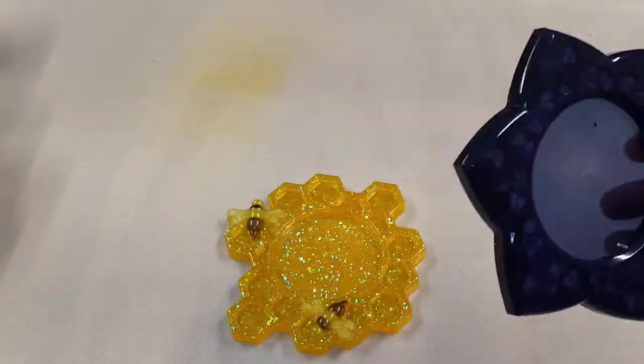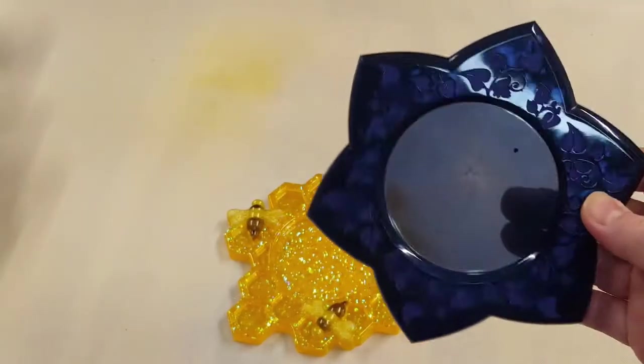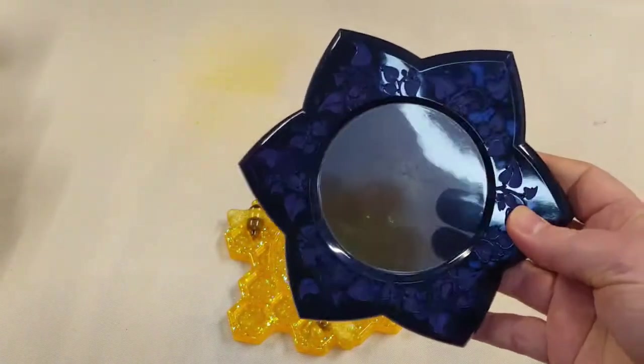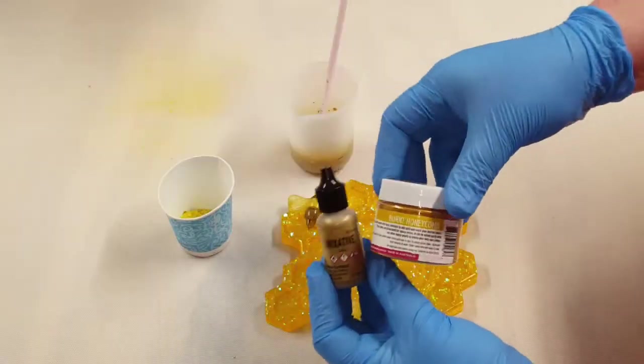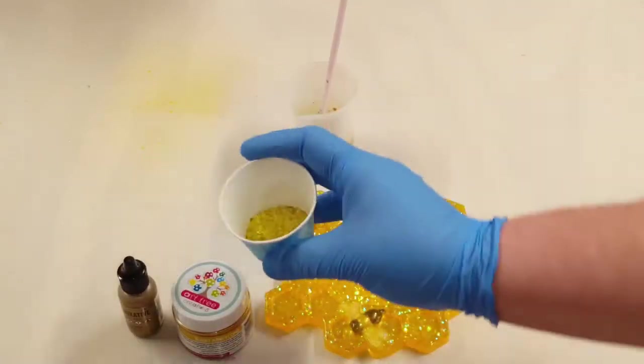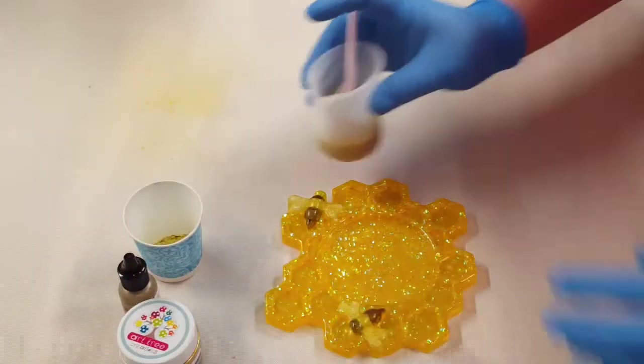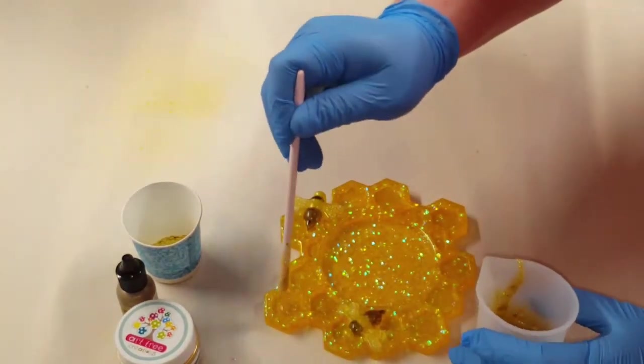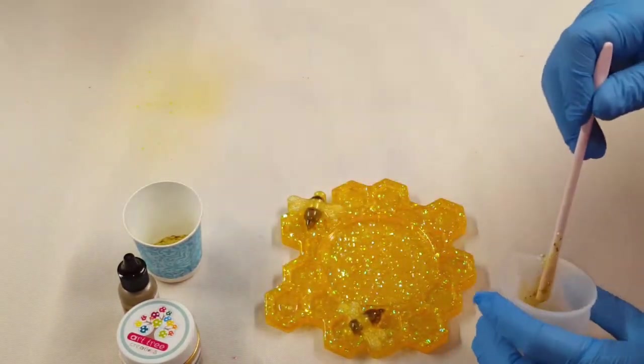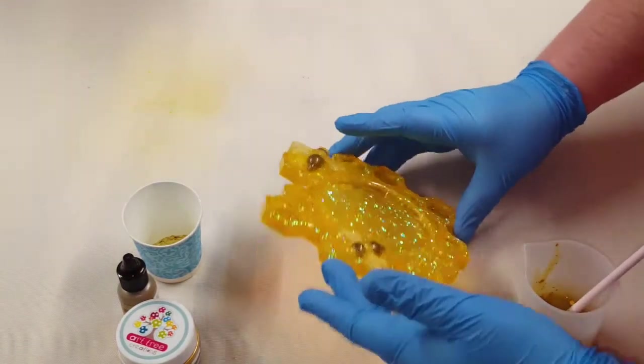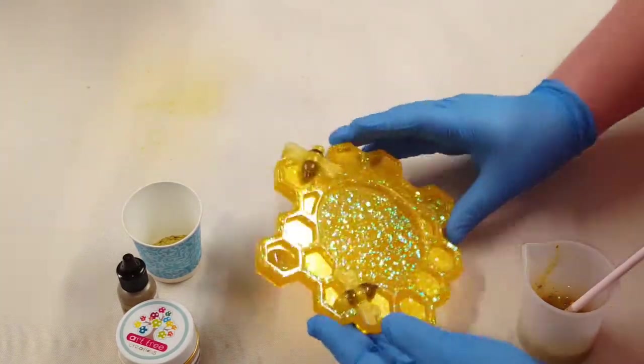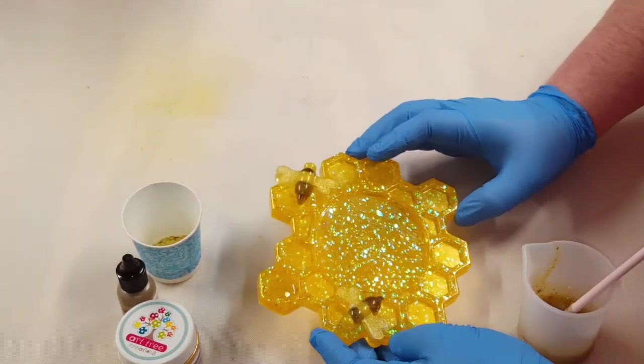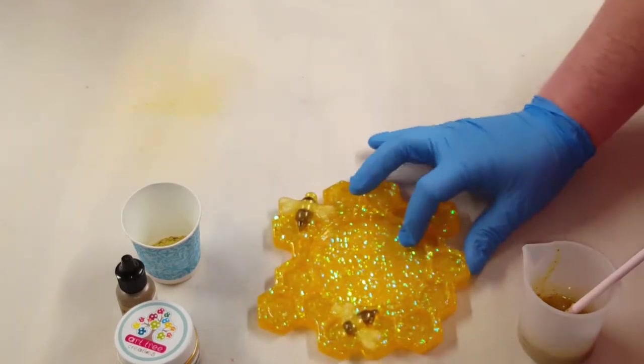So I decided to, I mixed up a little bit of resin and I'm going to kind of fill in those honeycombs. So into my resin I've got some gold alcohol ink mixed with that golden mica powder and then some yellow glitter. That yellow glitter is just a combination of different yellows that I had, I just made my own mixture.